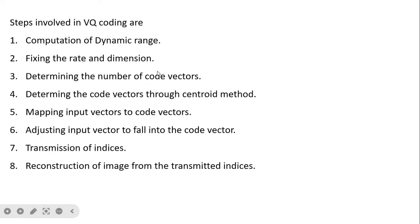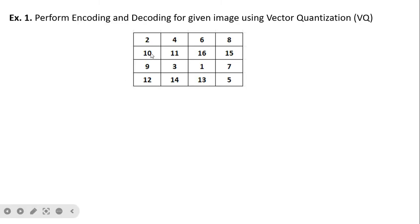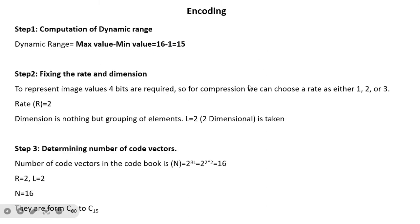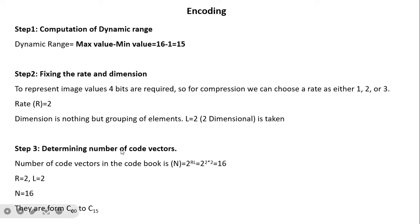The second step is fixing the rate and dimension. Approximately 4 bits are required to represent this image. Since this is a lossy compression technique, we choose a lower rate. If r equals 4, the result is the same as the original image, so we take an intermediate compression rate of r = 2. Dimension l is the grouping of elements and we take l = 2. The number of code vectors is then 2 raised to r times l = 2 raised to 2 times 2 = 2 raised to 4 = 16.